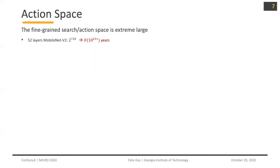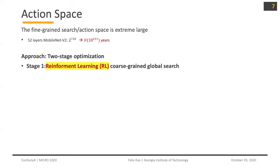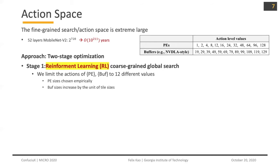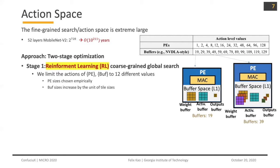The action space is the number of PE and buffer to assign. Taking a simple example of 52 layers of MobileNet V2, if you don't constrain the action space, you end up with an extremely large action space. Our approach is a two-stage optimization. In the first stage, we use reinforcement learning with a coarse-grained action space — limiting PE and buffer to 12 different values. PE size is chosen empirically, and buffer size increases by the unit of tile size. For example, generating one output at a time requires 9 weights and 9 activations, so buffer size is 18; for 3 outputs you need 39 buffers.